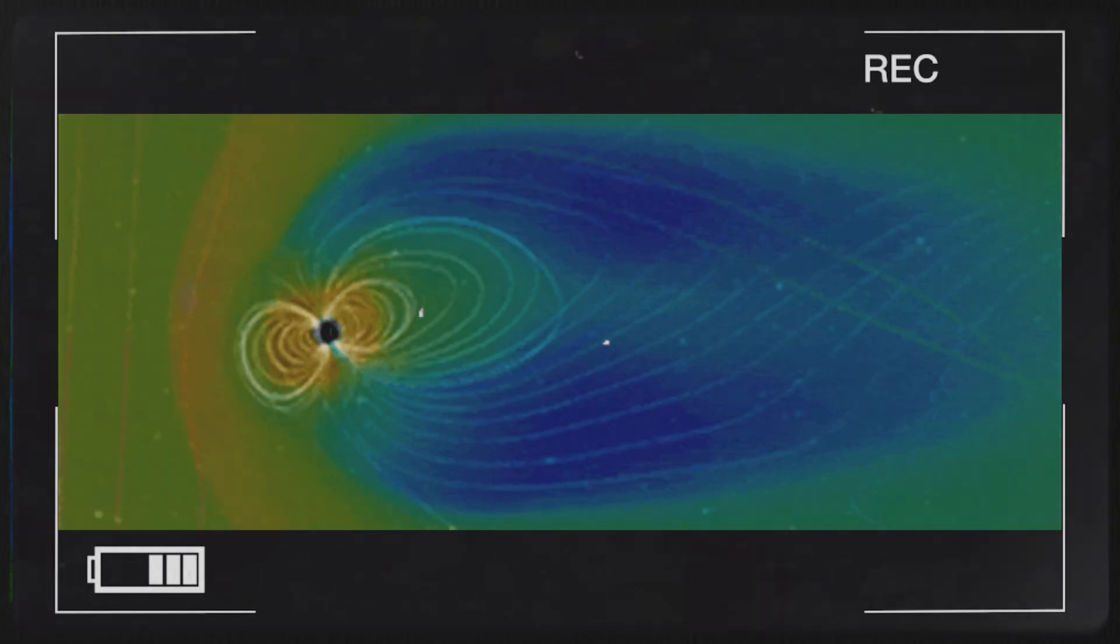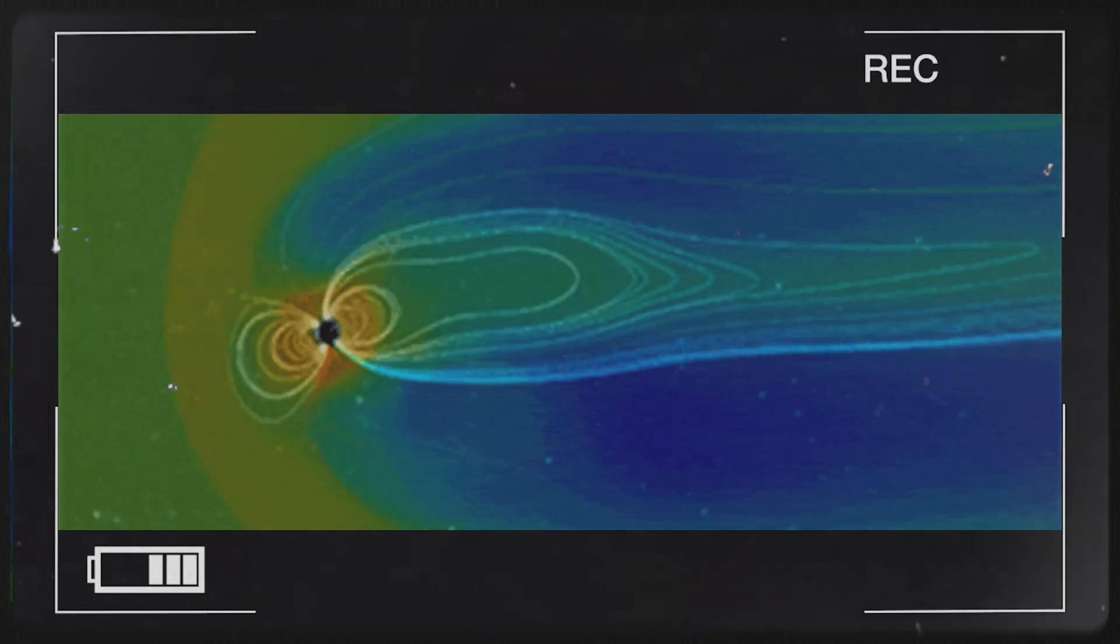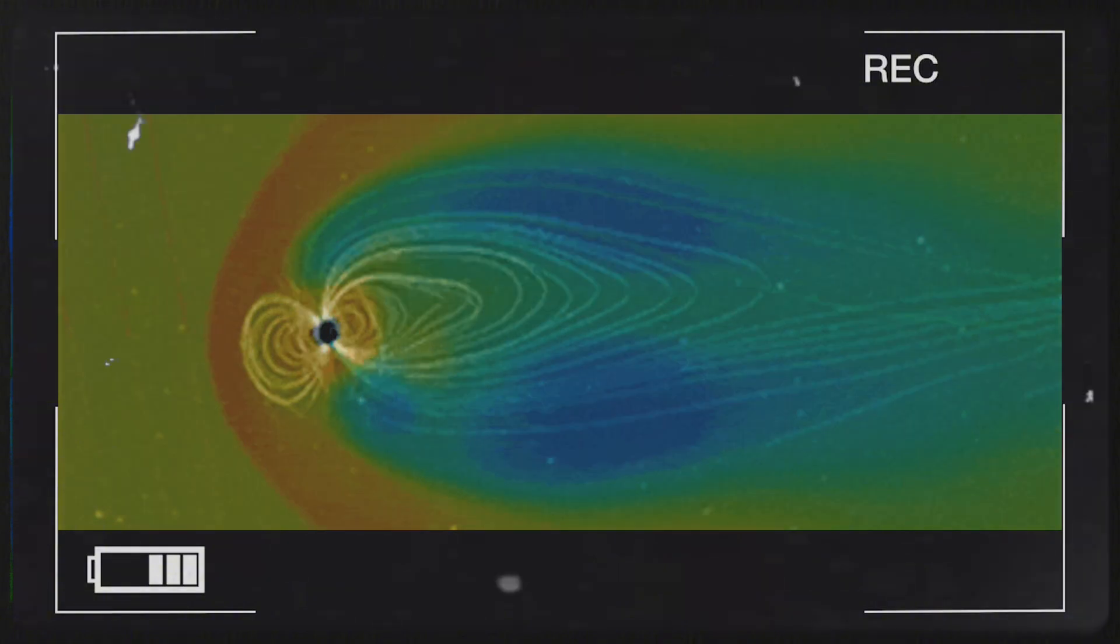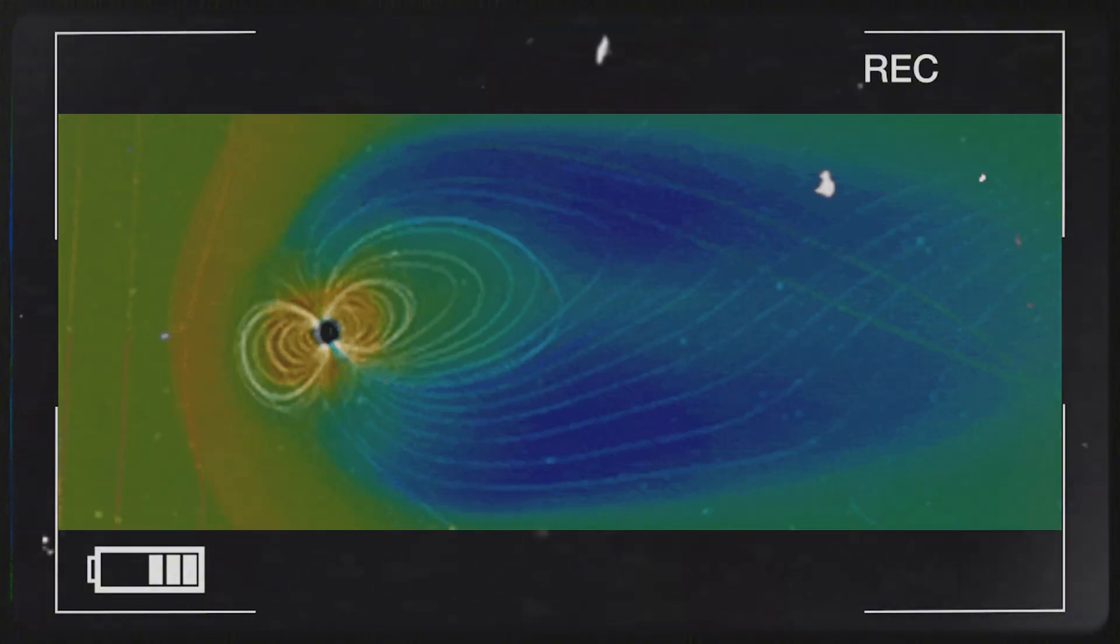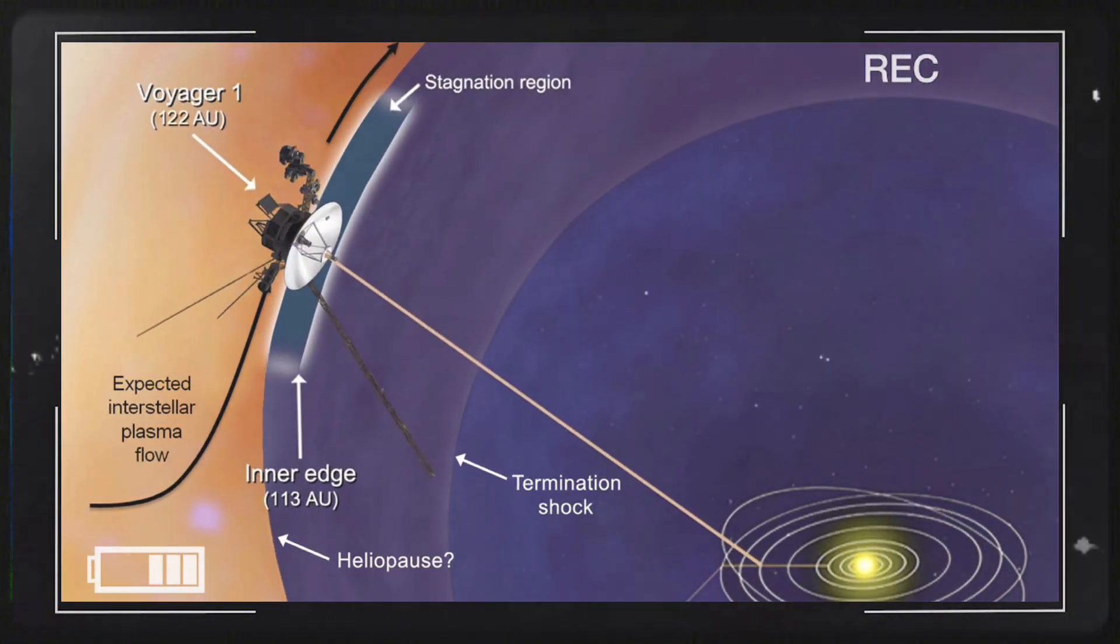For example, scientists discovered that the interstellar magnetic field is nearly three times stronger than had been previously believed. This significant revelation has profound implications. It indicates that interstellar particles exert about 10 times more pressure on the heliosphere than theoretical models had suggested.